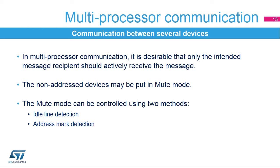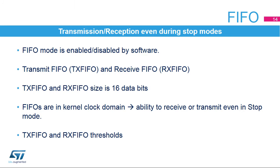The LPUART can operate in FIFO mode, which is enabled or disabled by software. The LPUART comes with a transmit FIFO (TX-FIFO) and a receive FIFO (RX-FIFO), each being 16 words deep. The TX-FIFO is 9 bits wide. The RX-FIFO default width is 12 bits, due to the fact that the receiver stores not only the data but also the error flags associated with each character.